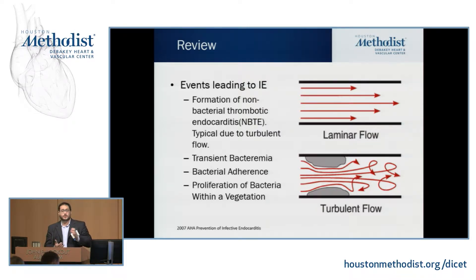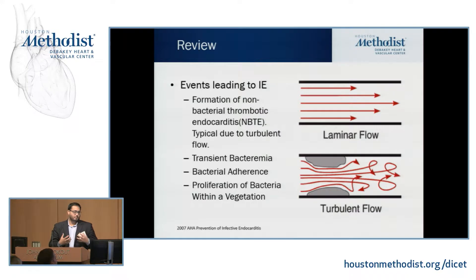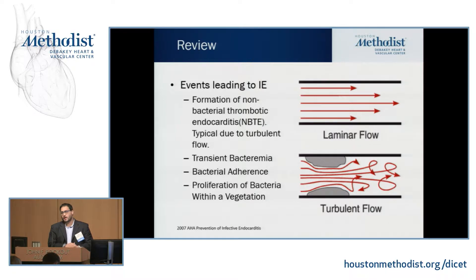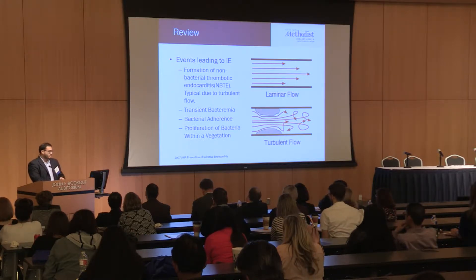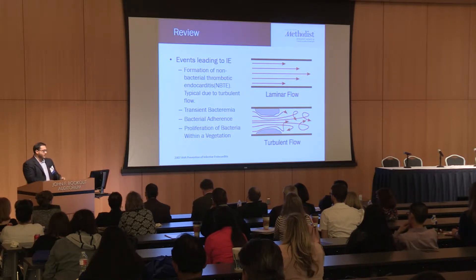Turbulent flow could be caused by an injury to the vessel, plaque as you get older, or calcium deposits. After there's this turbulent flow, bacteria get loose in your bloodstream. This could be something as simple as brushing your teeth, a surgical incision, a cut on your skin, or an upper respiratory infection. Once that happens and bacteria are in your bloodstream, they have to find these rough spots and adhere to them. Then the bacteria have to grow and cause a vegetation.